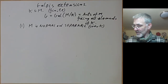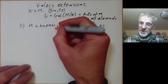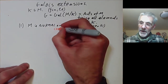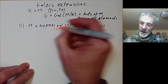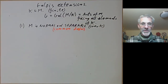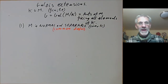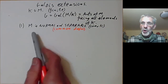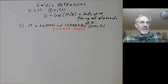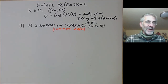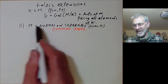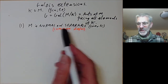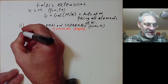This is probably the most common definition of Galois, though it looks rather artificial — why normal and separable rather than some other two random properties? So this definition is convenient but not very intuitive.